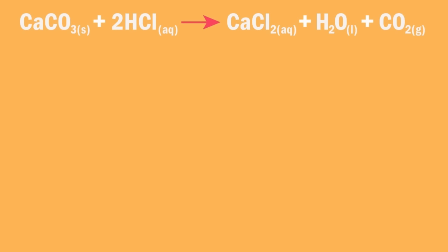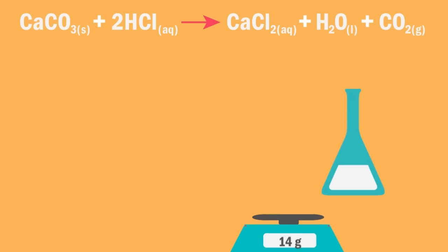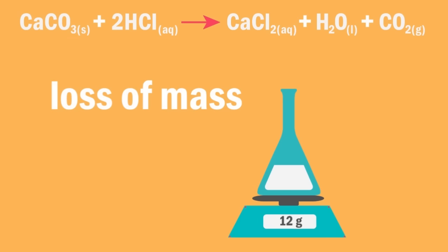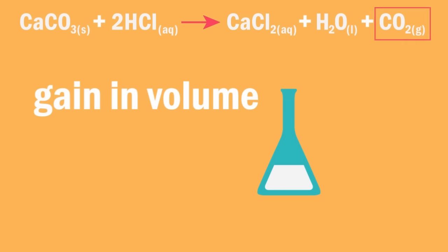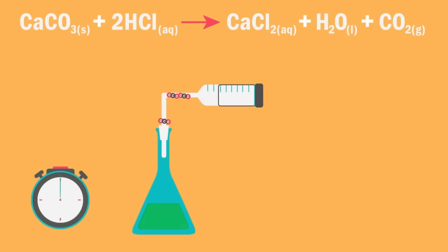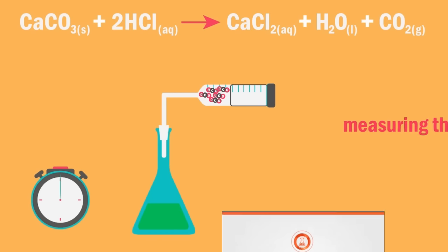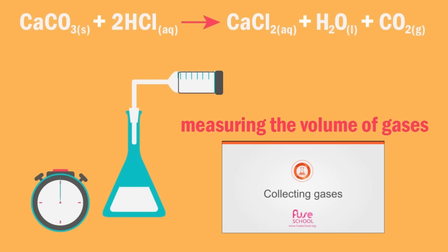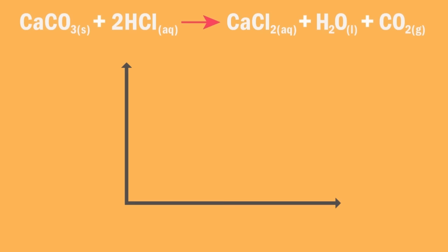There's another method we mentioned earlier. Consider the same reaction — instead of measuring the loss of mass of the reactant, we can measure the gain in volume of the product carbon dioxide, using an apparatus like this. This time we plot a graph of volume of gas produced against time.